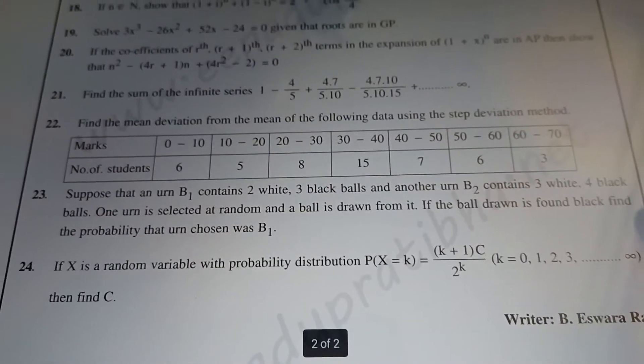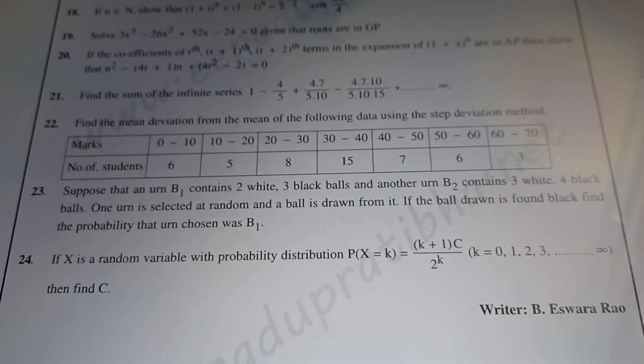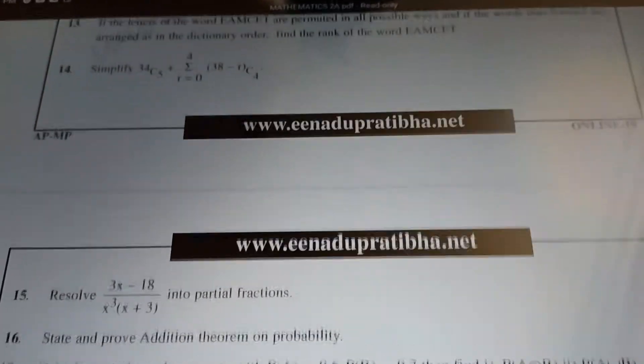Find the mean deviation from the mean. Next, B1, B2, that is one. Find the random. If X is the random variable with probability distribution P of X is equal to K, then find K. This is the question before 2A. Now, 2B. Move over to them.